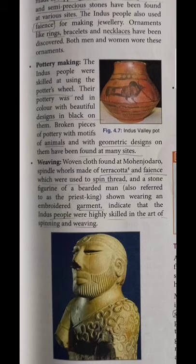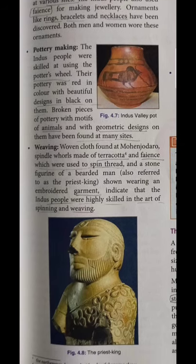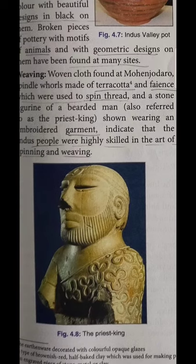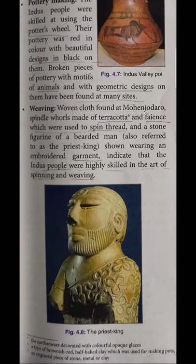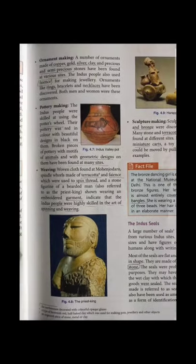The next one is related with weaving activities. Woven clothes were found at Mohenjodaro. Spindles, terracotta spindle whorls, and spun threads were used. A figurine of a bearded man is also made, considered to be a priest-king. You can see embroidery on various garments. Weaving and spinning were skilled arts practiced by them.